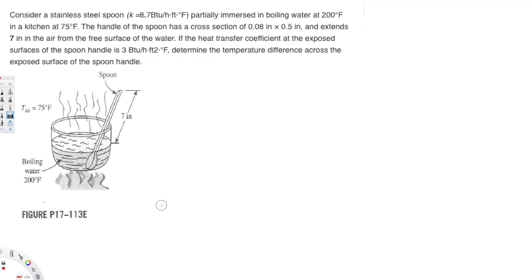Let's try this problem. The question asks: consider a stainless steel spoon partially immersed in boiling water at 200°F in a kitchen at 75°F. The handle of the spoon has a cross-section of 0.08 inches by 0.5 inches and extends 7 inches in the air from the free surface of the water. The heat transfer coefficient at the exposed surface of the spoon handle is 3 BTU per hour·ft²·°F. Determine the temperature difference across the exposed surface of the spoon handle.